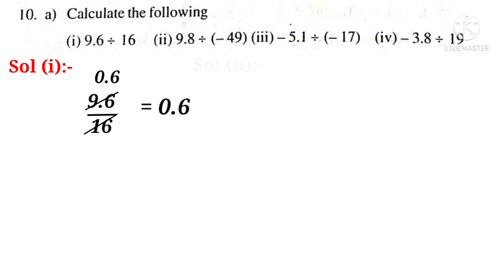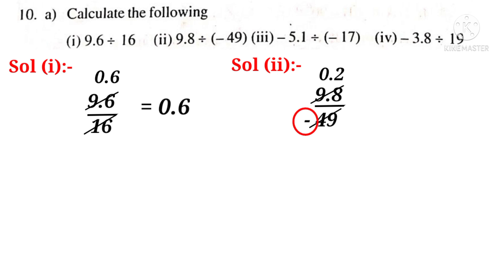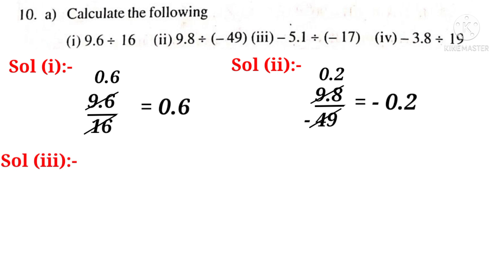Solution 2: 9.8 by minus 49. On simplification by 49, 0.2 times. That is equal to minus 0.2. Solution 3: minus 5.1 divided by minus 17. On simplification by 17, 0.3 times. That is equal to 0.3.